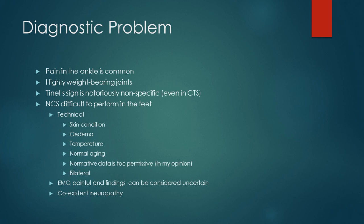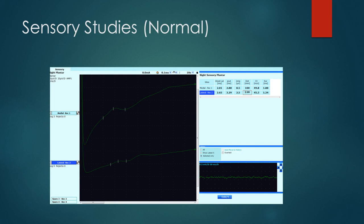Let me show you a couple of slides of a patient I have seen with tarsal tunnel. Starting with the normal side and the sensory studies: the top signal is from the medial plantar nerve and it has an amplitude of 8.5 microvolts — these are very small responses — with a conduction velocity of 49 metres per second. We also have the lateral plantar sensory response at 2.5 microvolts and a conduction velocity of 45 metres per second. These are normal values.